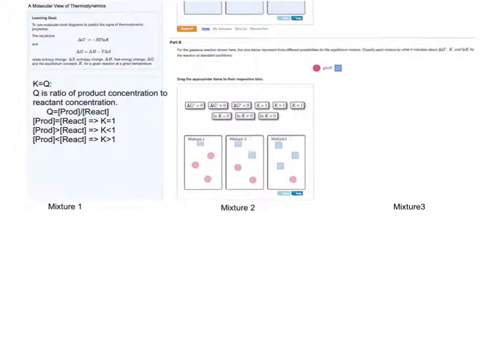This problem is asking us to take a look at a molecular view of thermodynamics. Part B is asking us to classify each mixture by what it indicates about delta G0, K, and natural log of K for the reaction at standard conditions.